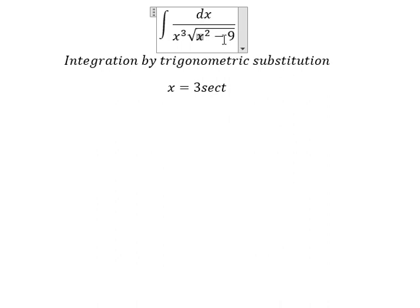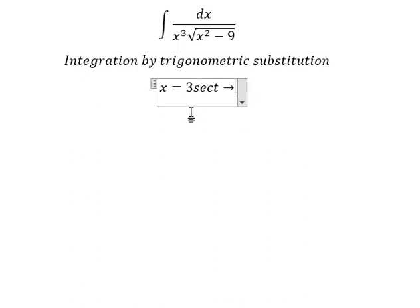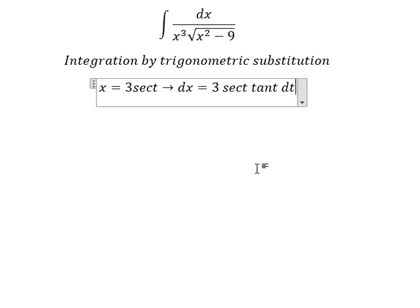We simplify the square root and then simplify. Next, we need to take the derivative of both sides, and we have dx equals 3 secant t tan t dt.